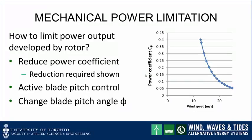How do you limit the power output developed by the rotor? The basic idea is to reduce the power coefficient. The reduction required is shown for a rotor with CP equal to 0.4 at the rated speed of 12.9 meters per second — the rotor behaves normally up to that point, and then we reduce CP to achieve the same rated output at higher wind speeds, essentially making the wind turbine performance degrade. This can be done with active blade pitch control — a mechanism that changes the blade pitch angle φ — as discussed in the lecture on aerodynamic lift techniques.